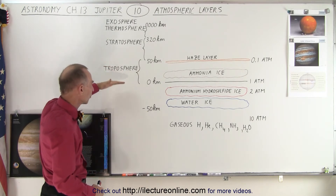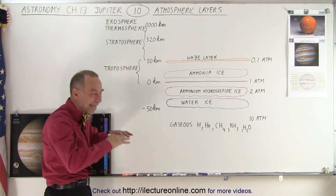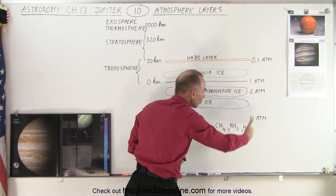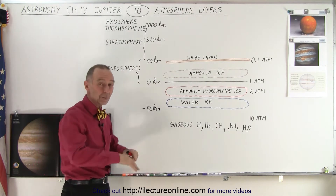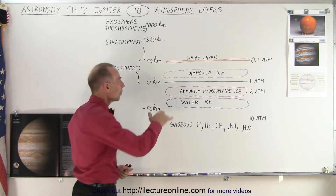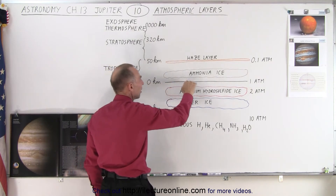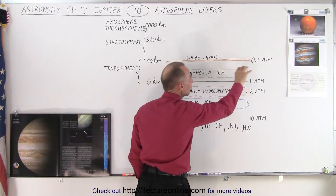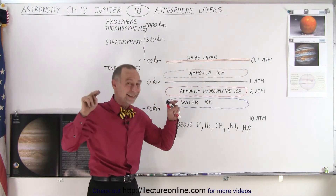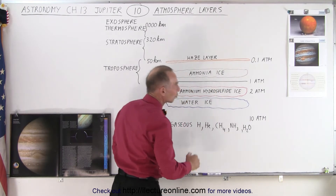Let's look at the details of the troposphere and what's below it. At the very top of the troposphere, where pressure is about 0.1 atmosphere, we have a hazy layer. Below that we find a lot of ammonia ice. Most of the gas in the atmosphere is hydrogen and helium, but we have cloud-like formations of ammonia ice clouds forming at about 10 to 30 kilometers above the one-atmosphere line.